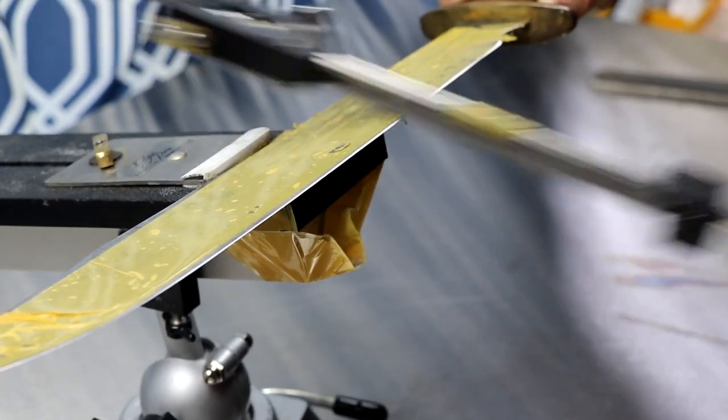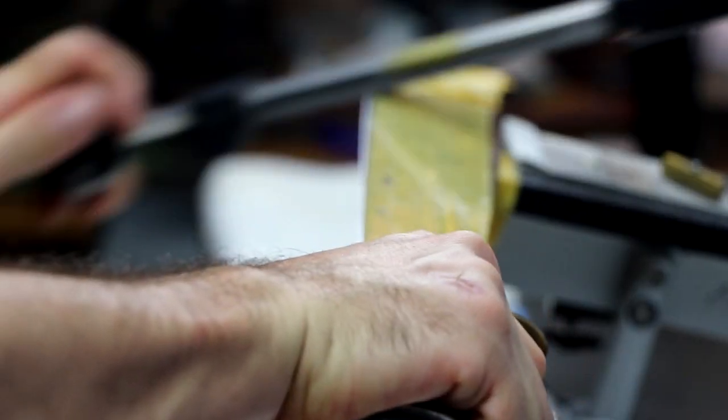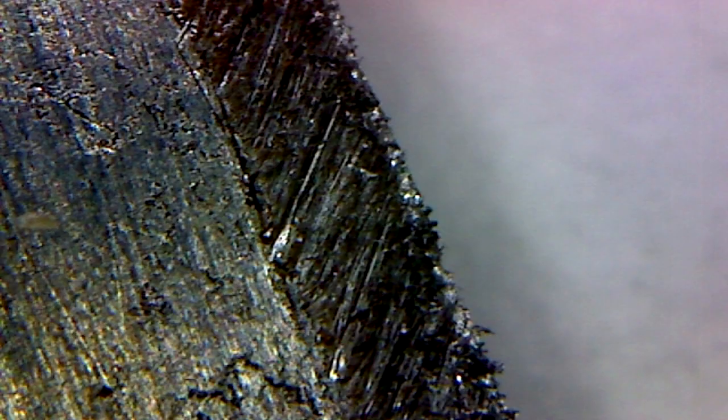This is what the coarse side did. Look how rough and aggressive it is. This thing just removed metal like a boss. Now we're going to flip it over and start using the medium side. And this is what that looks like. Just as aggressive, still ripping through that metal, but tightening it up.